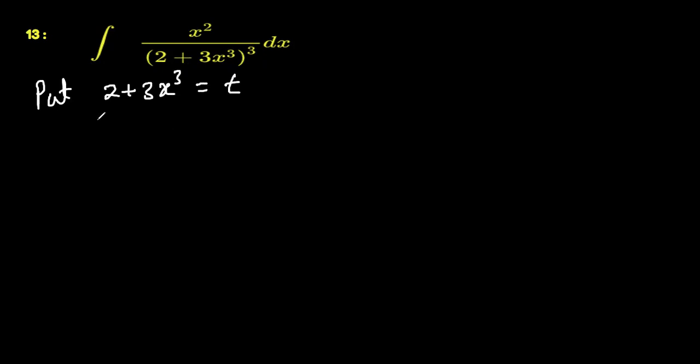Differentiating both sides with respect to x we get 3 times 3x² dx is dt, or 9x² dx is equal to dt. That means x² dx is 1 over 9 times dt.